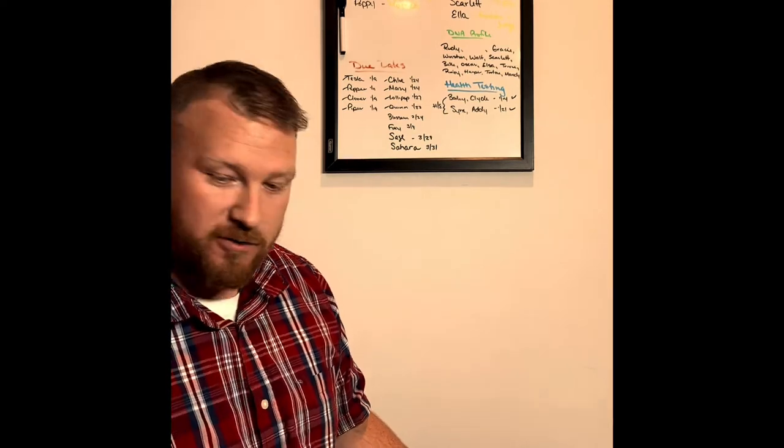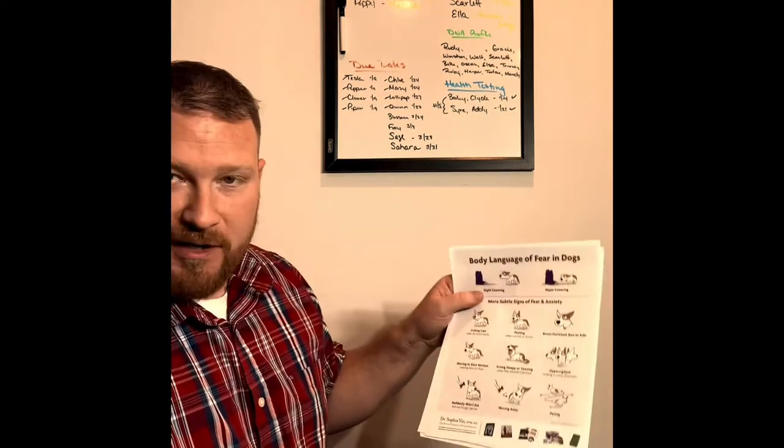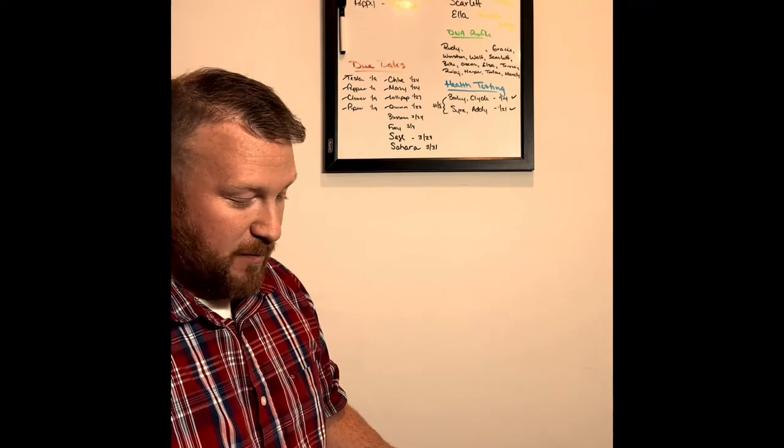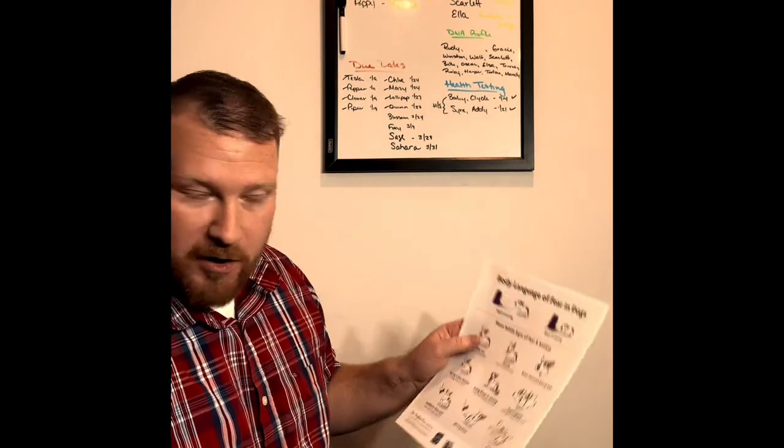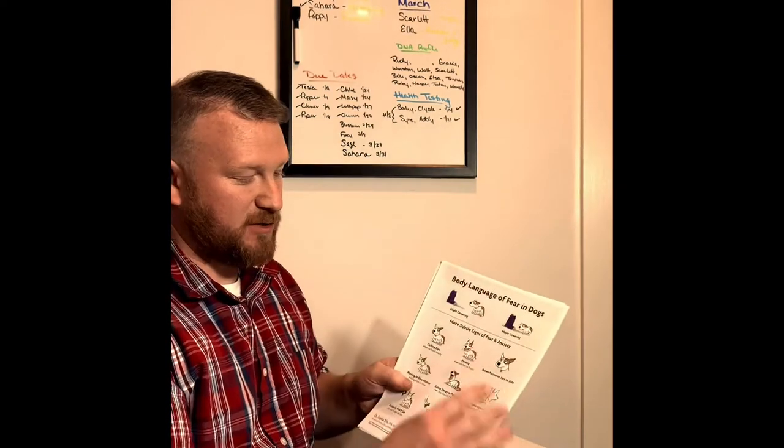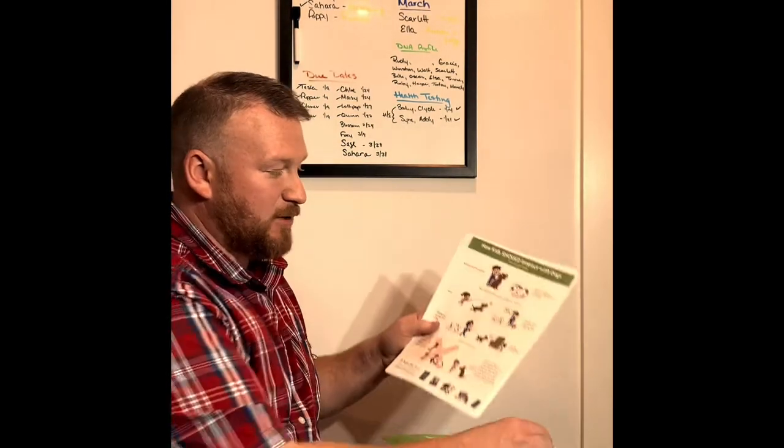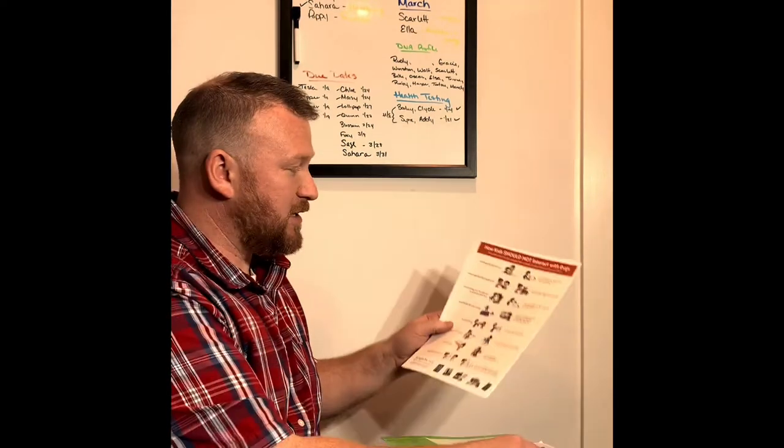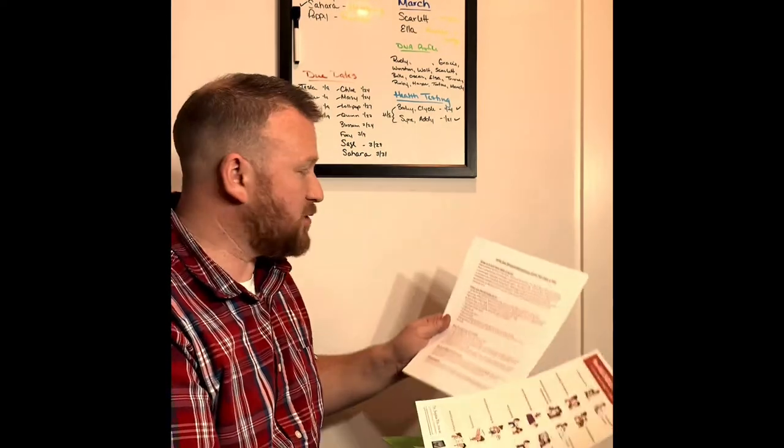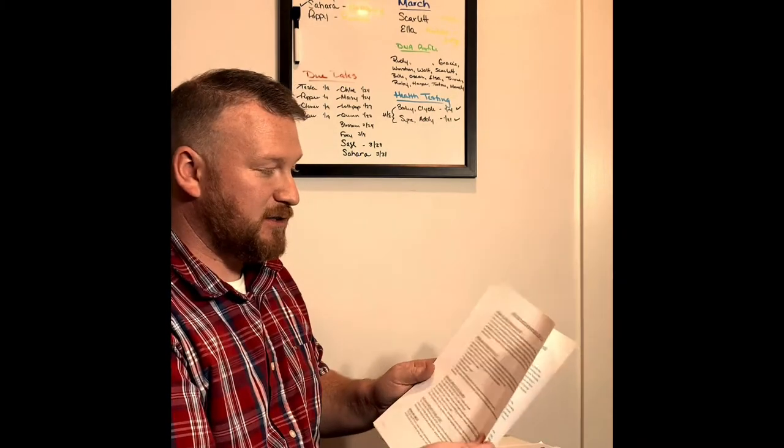And the next pages throughout the folder here is just some informational stuff about, something you can hang in your fridge, how to interact with dogs. Then we also have some informational things about how to interact with dogs, how dogs or kids shouldn't interact with dogs, just how to be safe around dogs, basically.